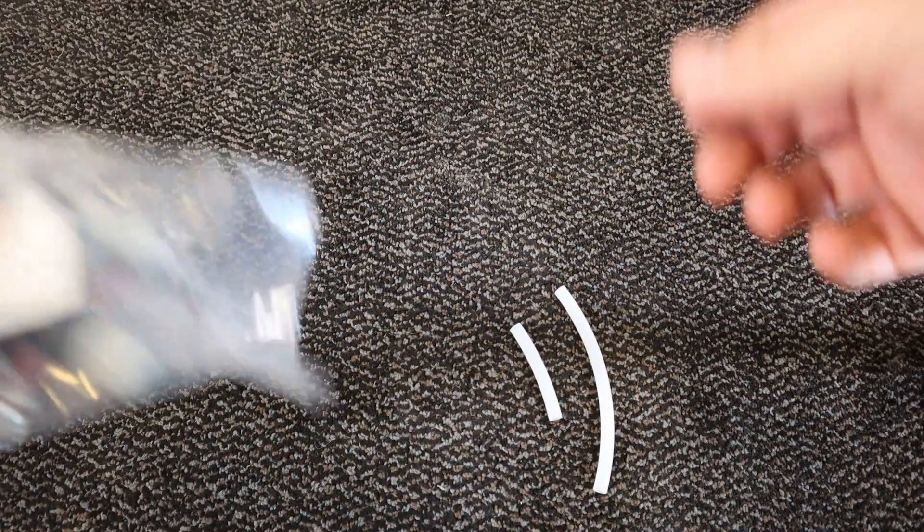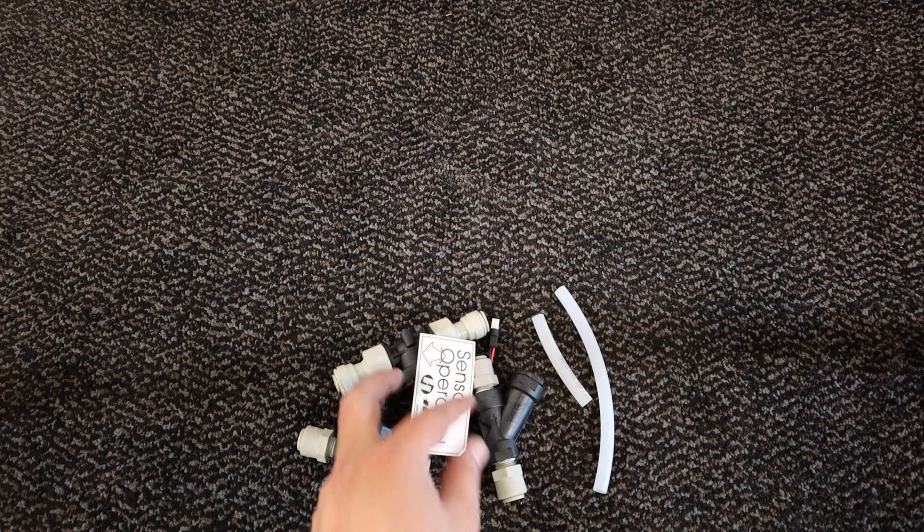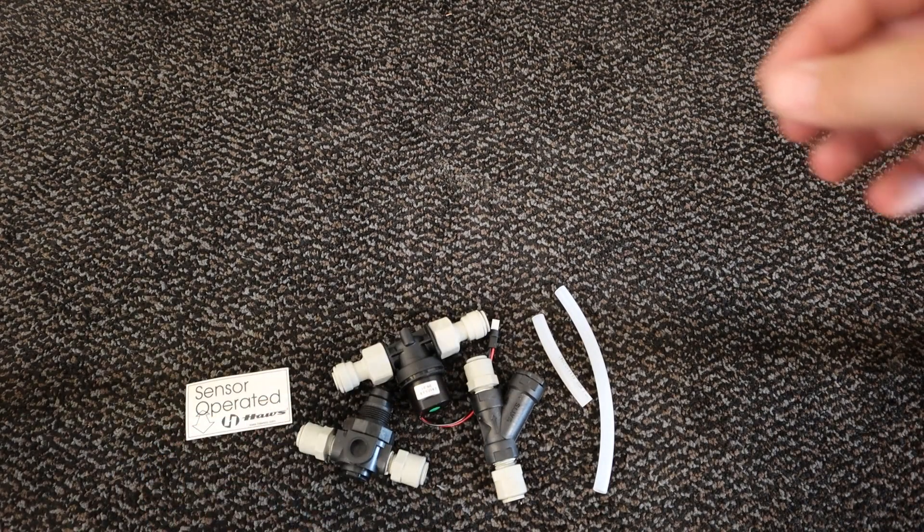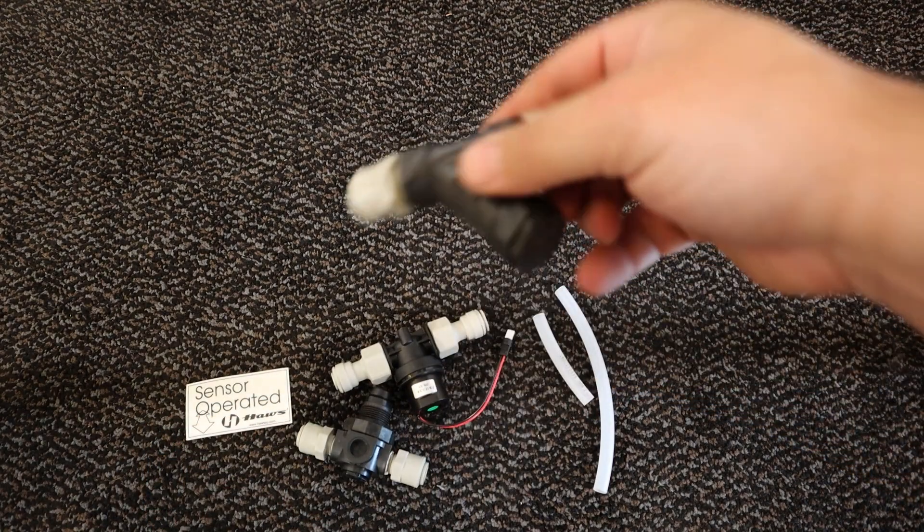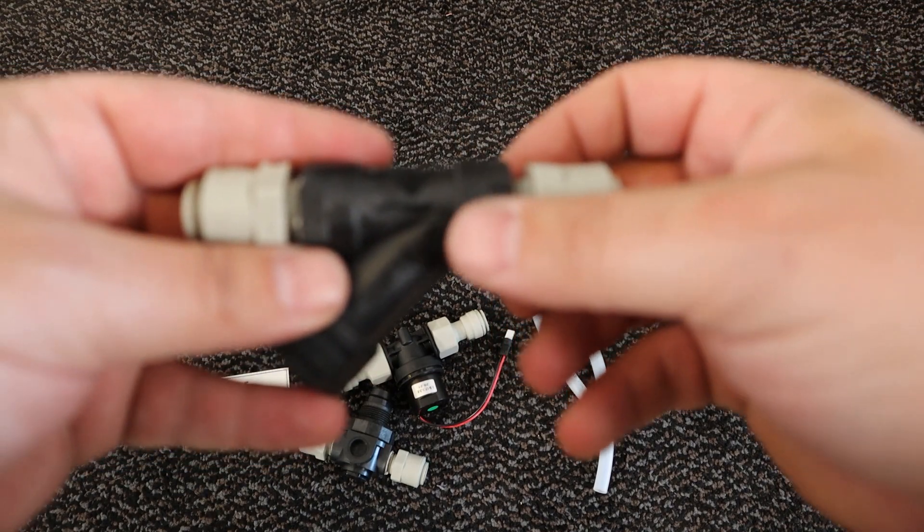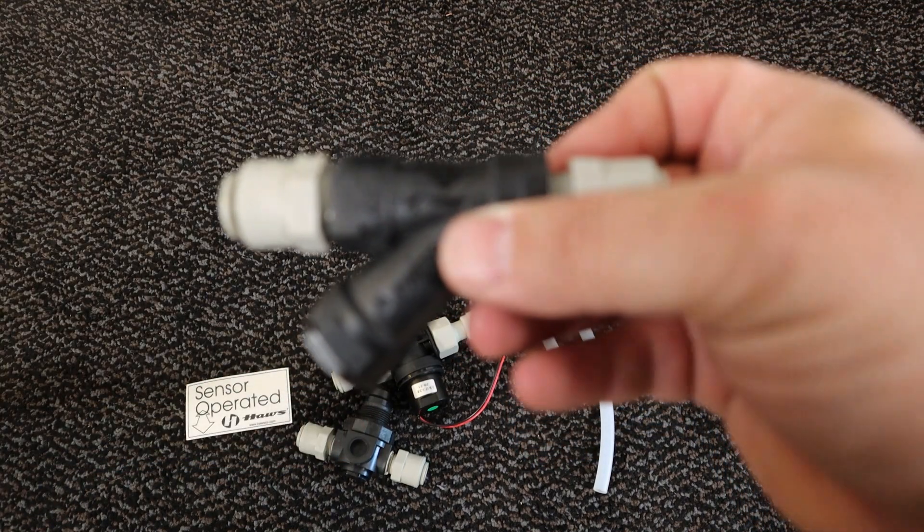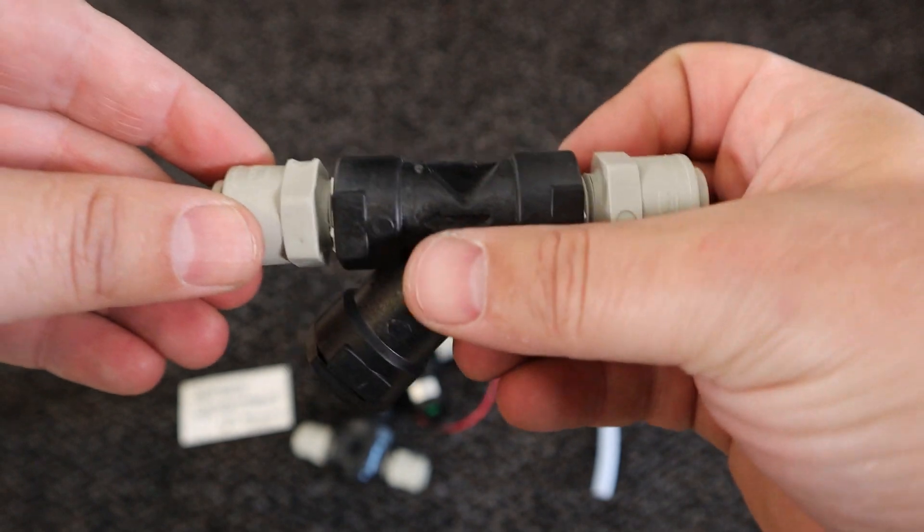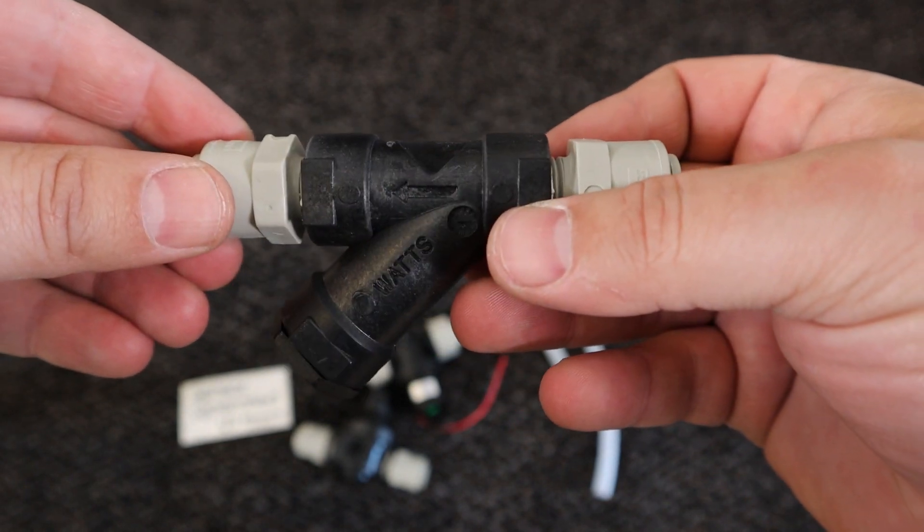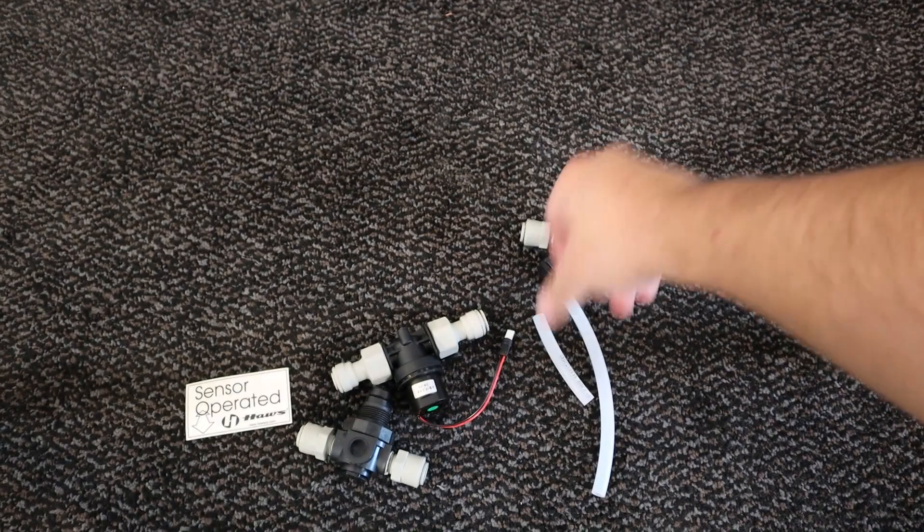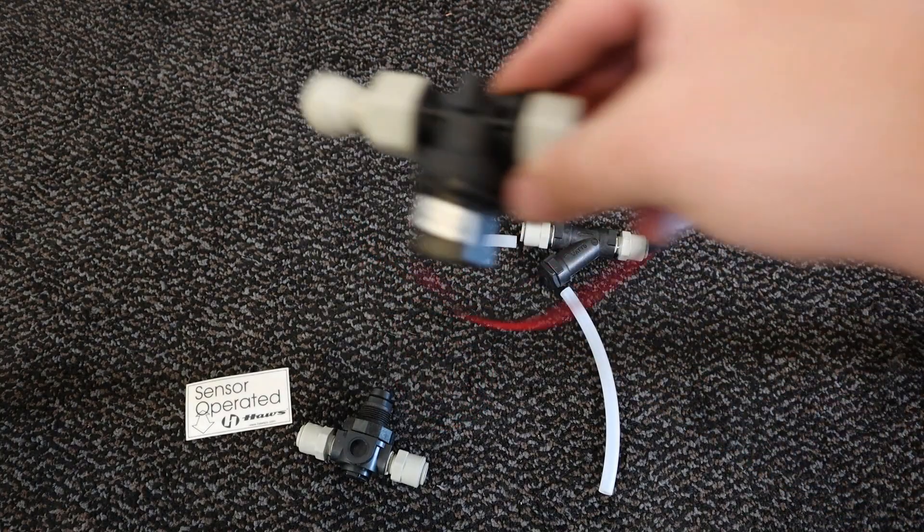Empty the contents of the sealed package and set aside the sensor operated label that comes with the valves until after installation. Do this while paying special attention to the arrows on both the Y strainer and solenoid valve that indicate the direction water should flow through each device.